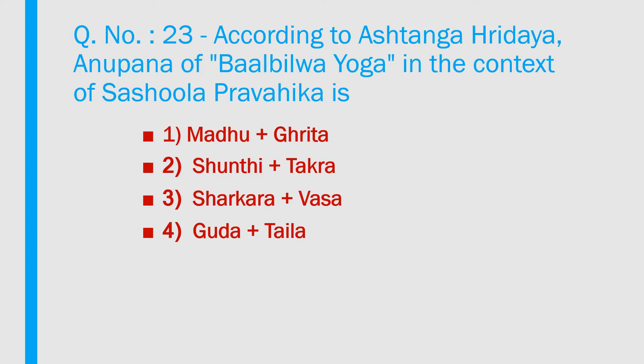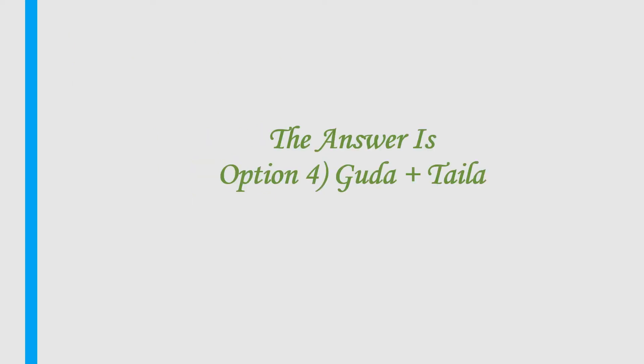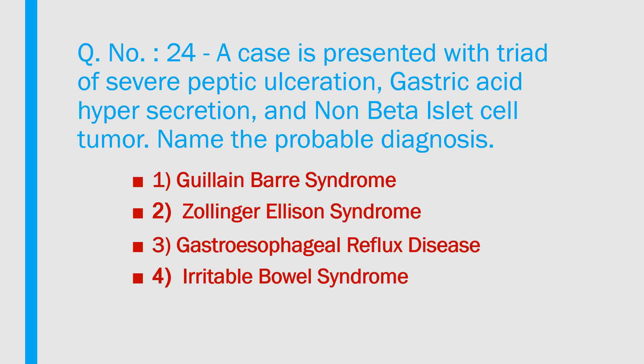Question number 23: According to Ashtanga Hridaya, the anupana of bala bilva yoga in the context of sashula pravahika is: 1) Madhu plus krita shundi plus takra; 2) Sharkara plus vasha; 3) Guda plus thaila. Answer is option 4 — Guda plus thaila.